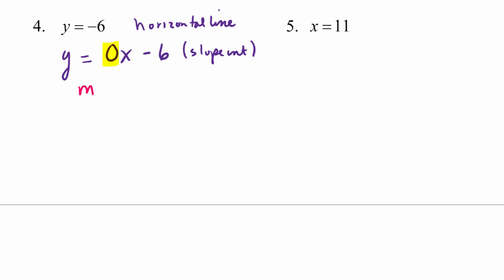And so that tells us something about the slope of horizontal lines. The slope is 0. So all horizontal lines, this is just a fact that you want to learn or memorize, that all horizontal lines have slope equal to 0. And here's another way to see that when we rewrite this horizontal line equation in slope-intercept form.